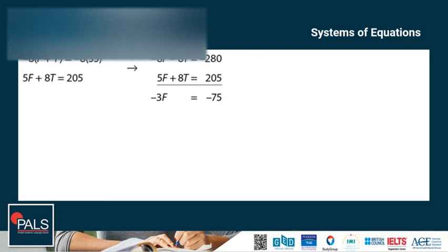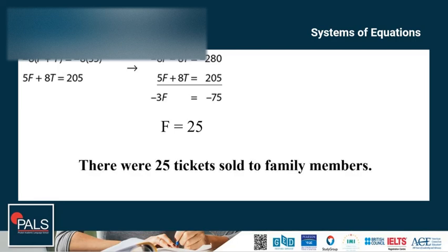Using elimination, we multiply negative 8 by the first equation to eliminate t, giving us negative 8f minus 8t is equal to negative 280. The second equation remains 5f plus 8t is equal to 205. Adding the two equations, t cancels out, giving negative 3f is equal to negative 75. Dividing both sides by negative 3 gives f equals 25. Since f represents the number of tickets sold to family members, there were 25 tickets sold to family members.